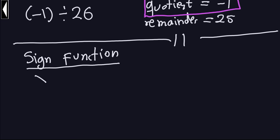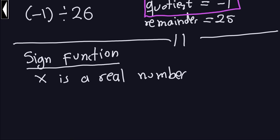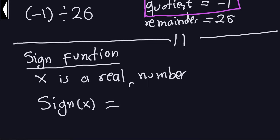If x is a real number — think about a real number as just any number that is not a complex or imaginary number — so for example x could be 1, 2, square root of 2, e, pi, whatever number you want, as long as it is not a complex number. So what is the sign of that number? Let's call that sign of x.